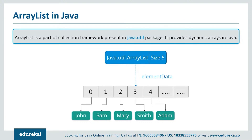Some key points to note: ArrayList is initialized by a size; however, the size can increase if the collection grows, or shrink if objects are removed from the collection. ArrayList allows us to randomly access the list, and ArrayList cannot be used for primitive types like int, char, etc. To access those, we need a wrapper class for such cases.